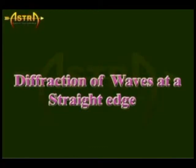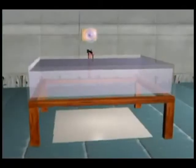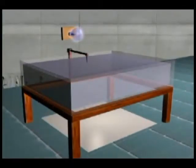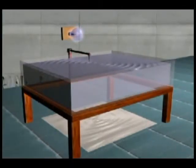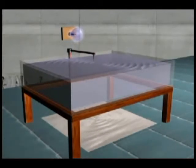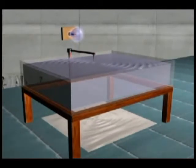Diffraction of waves through an aperture. Consider the arrangement of a ripple tank. Let the tip of the needle connected to the electrical vibrator produce circular wave fronts traveling along a straight way.